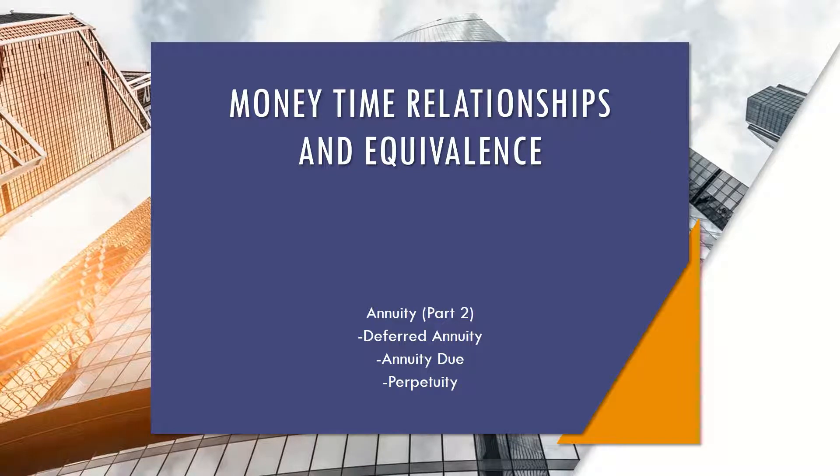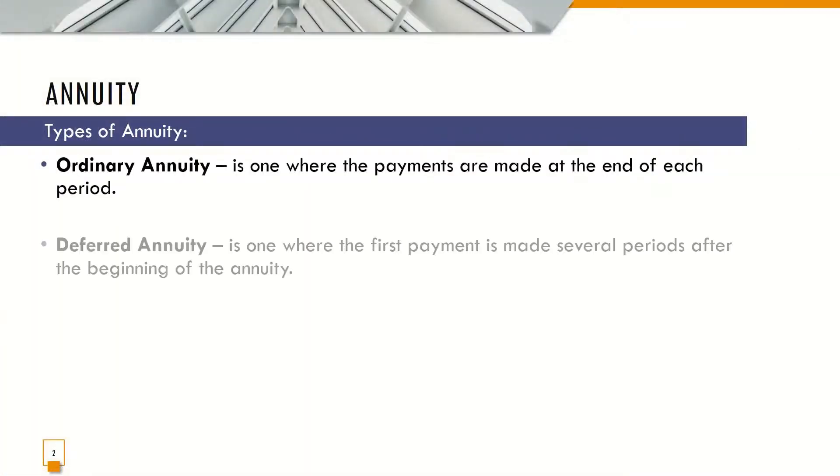In continuation with our topic, the money-time relationships and equivalents, we are going to discuss the three other types of annuity: the Deferred Annuity, Annuity Due, and Perpetuity.